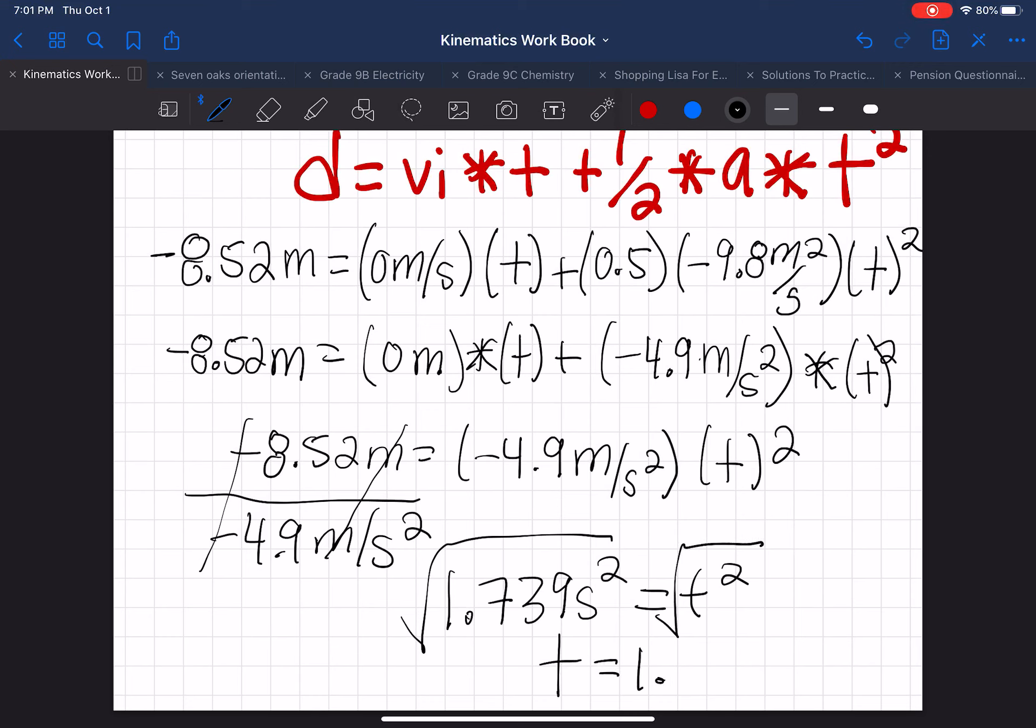And then we get 1.739 seconds squared equals t squared, and we're going to square root it to isolate the t and get the answer of 1.32 seconds. So the solution reveals that shingles will fall for a time of 1.32 seconds before hitting the ground.